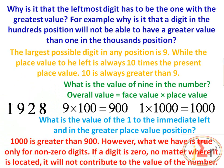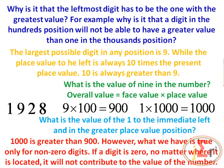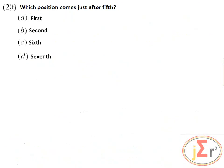One thousand is greater than nine hundred. However, this is true only for non-zero digits — if a digit is zero, no matter where it is located, it will not contribute to the value of the number.